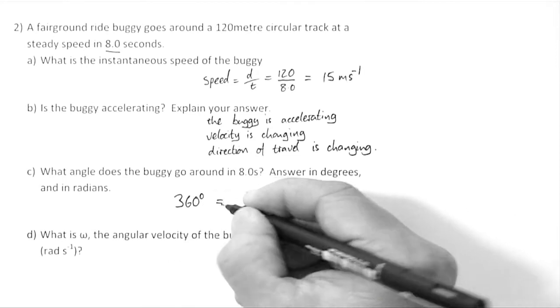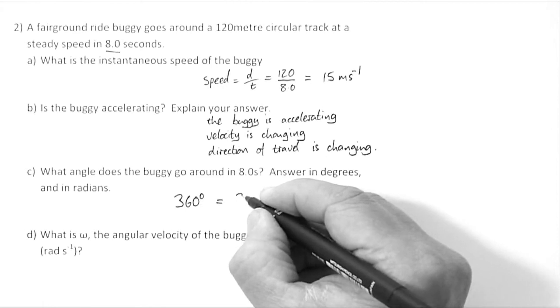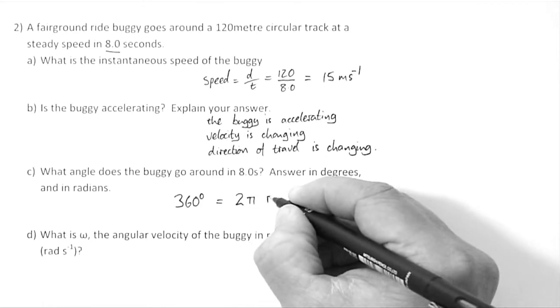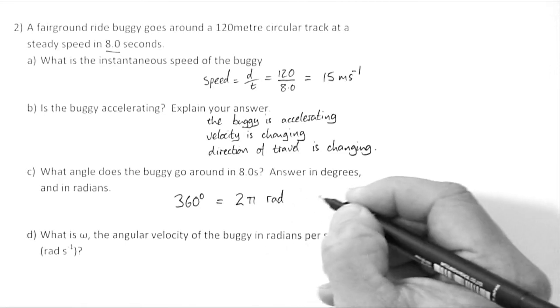And we must know that 360 degrees is the same thing as 2 pi radians. That's something you must learn.